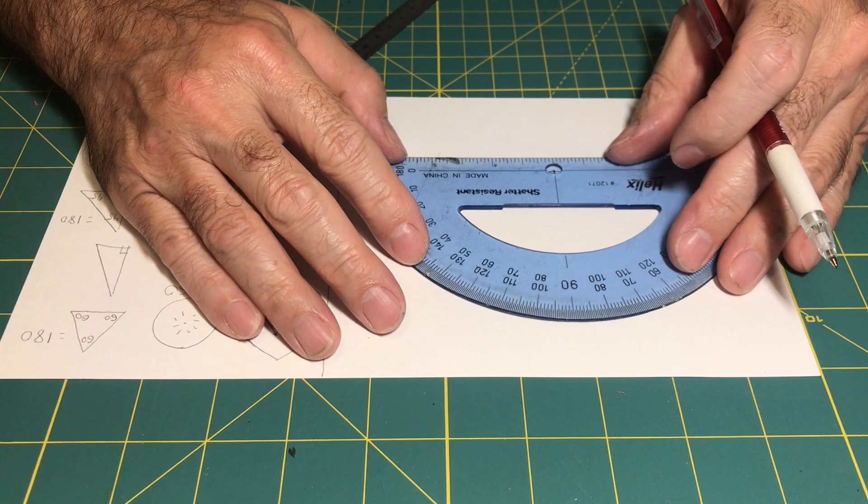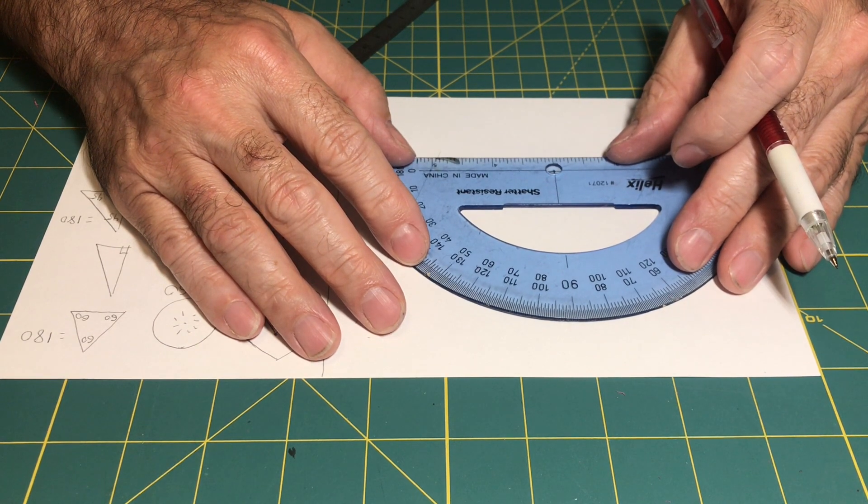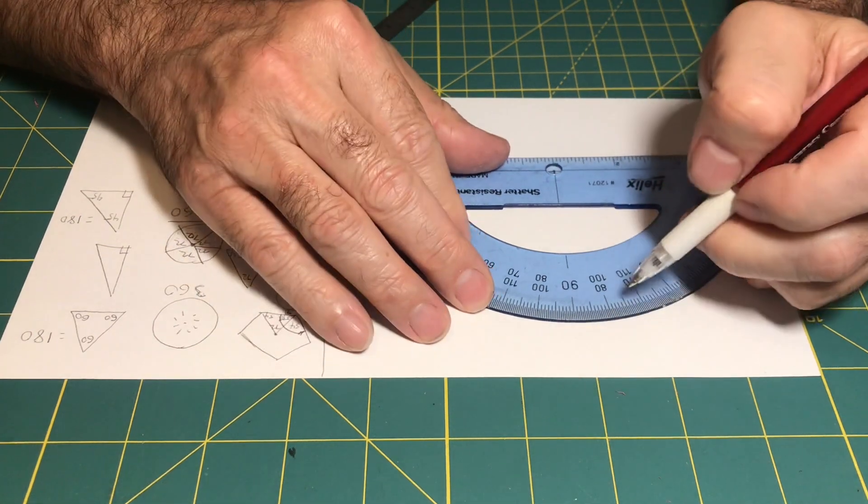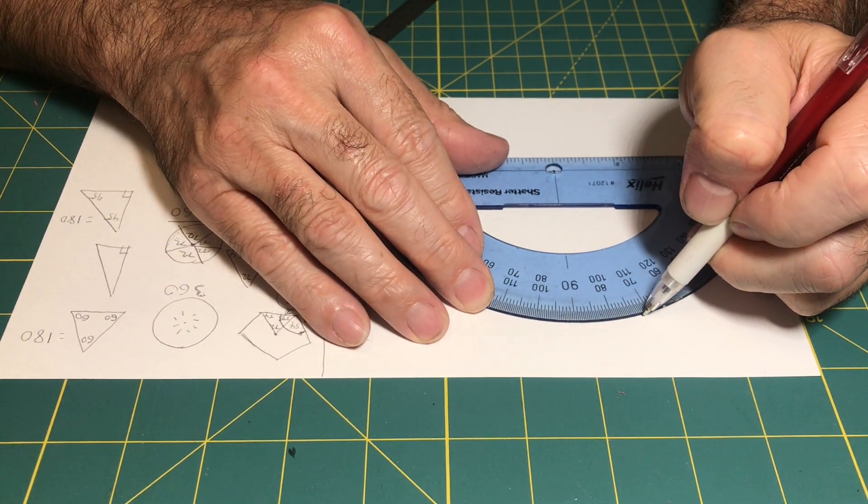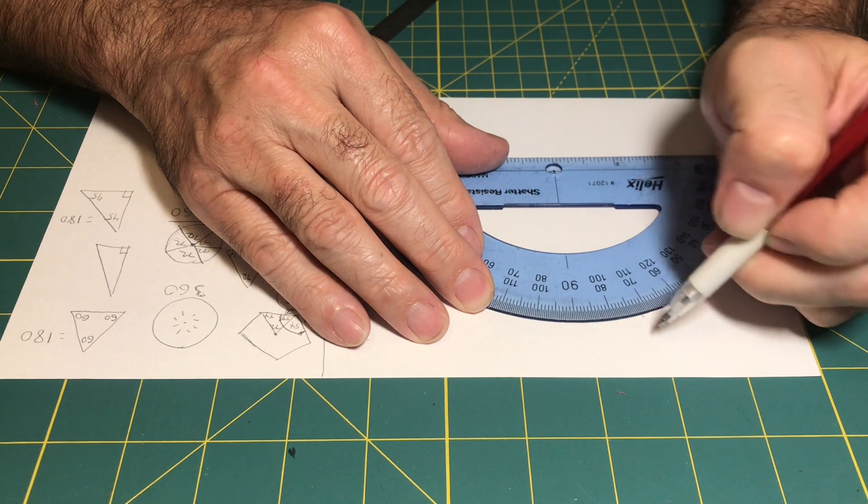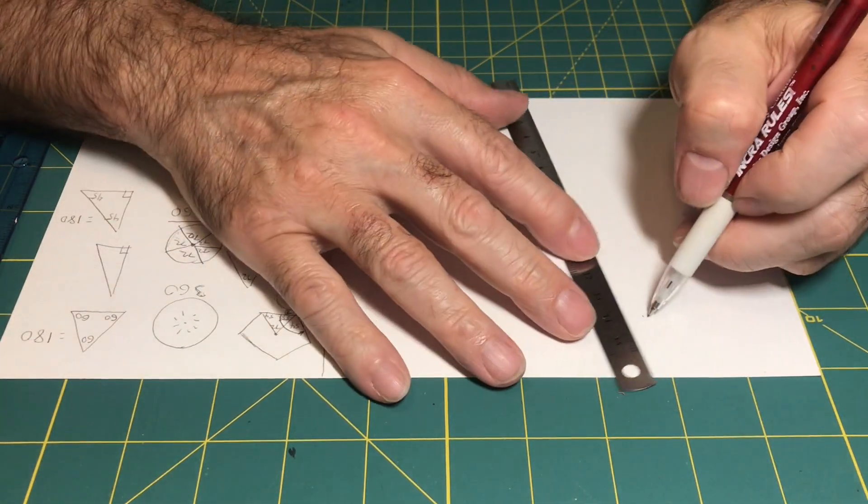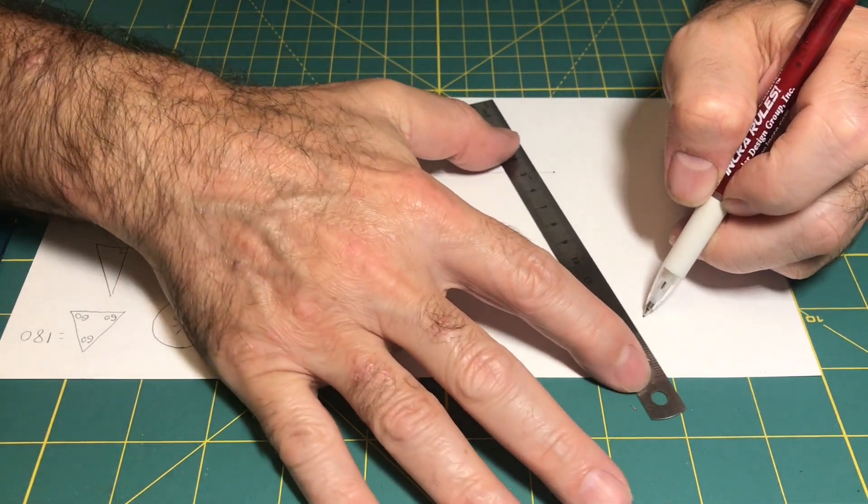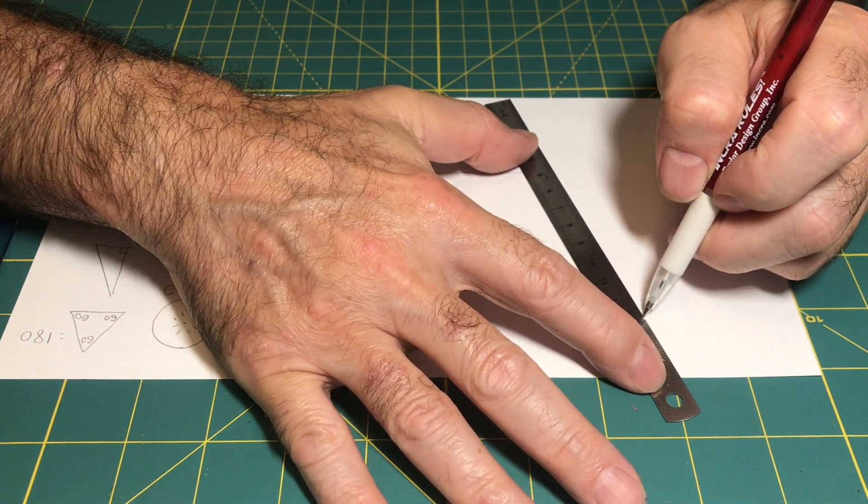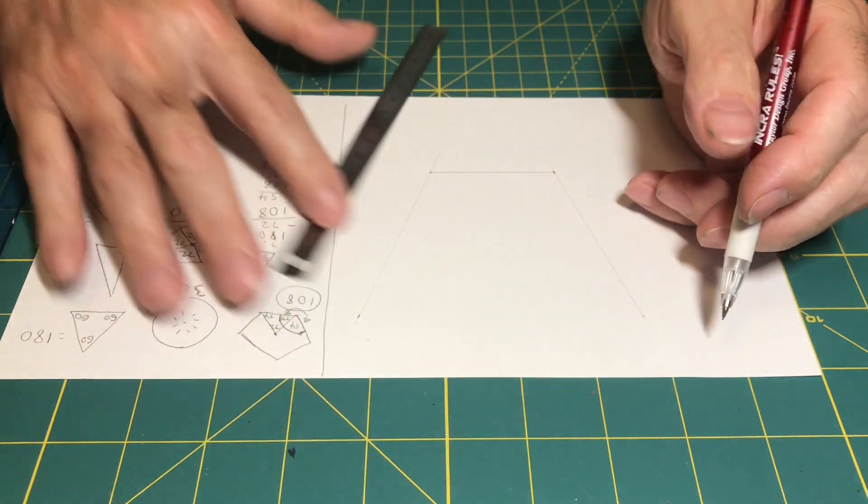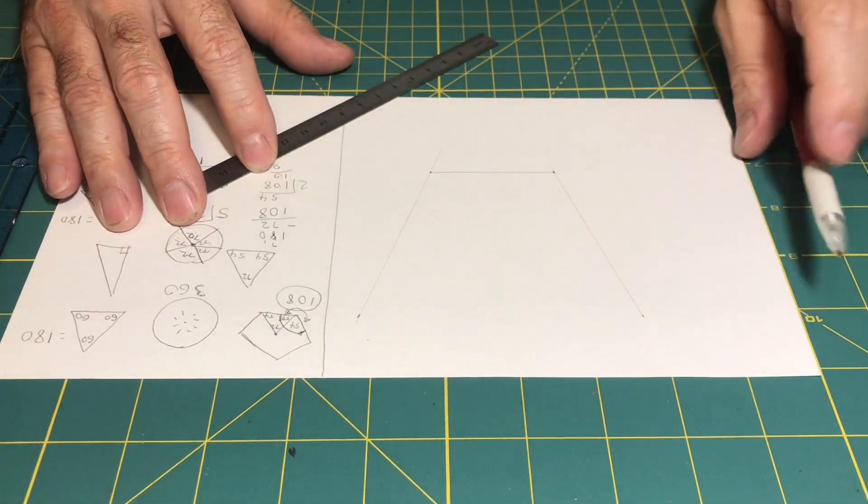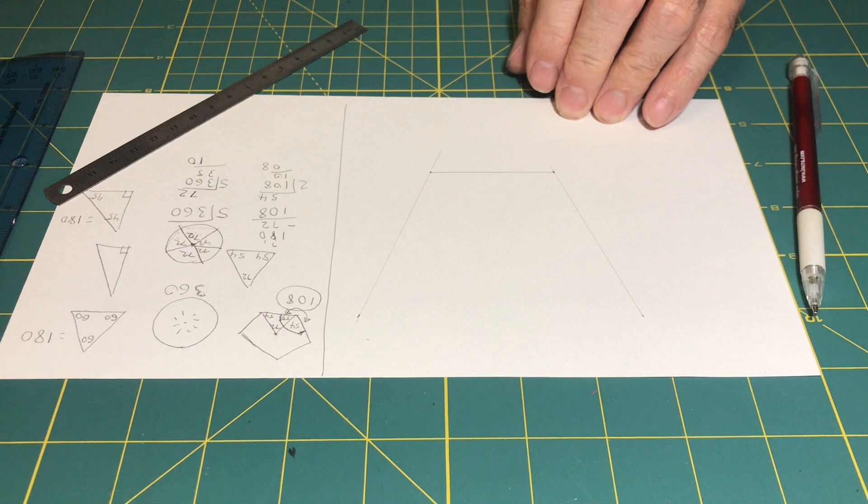I'm going to do the same for the other side. So I'm lining up my protractor properly, carefully, and mark off this 108. And do the same thing, drawing carefully, trying to get that angle drawn. I'm not drawing very heavy because these are too long. I don't need them that long. So now I'm going to get to my compass.